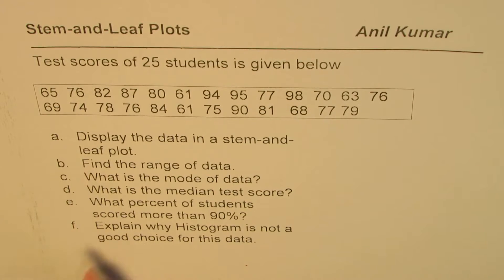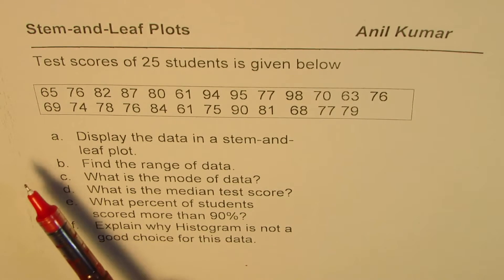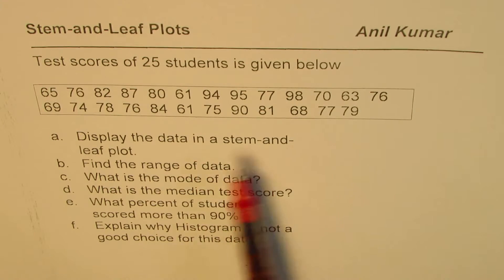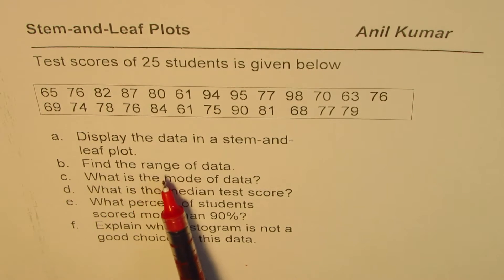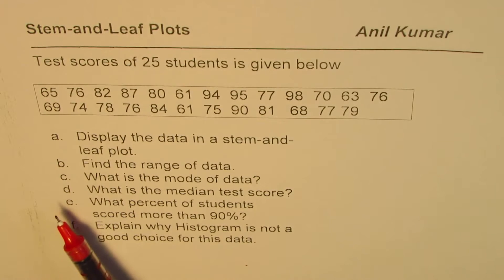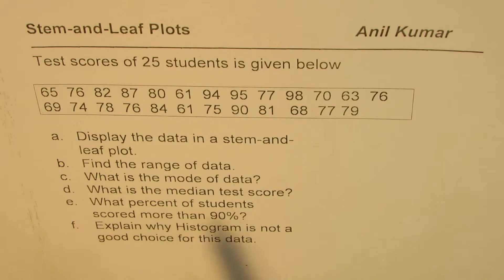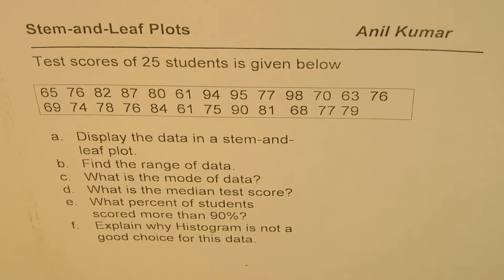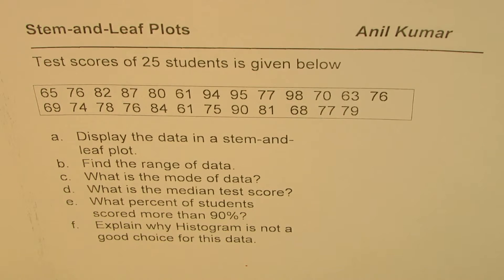Based on these scores you need to answer these questions. First one, A: display the data in a stem-and-leaf plot. B: find the range of data. C: what is the mode of data? D: what is the median test score? E: what percent of students scored more than 90 percent? And F: explain why histogram is not a good choice for this data.